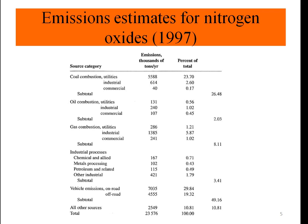These are the emission estimates for nitrogen oxides from different sources: coal combustion is around 26.5%, oil combustion around 2%, gas combustion around 8%, industrial processes around 3%, and vehicle emissions — on-road and off-road combined — are almost 50%.